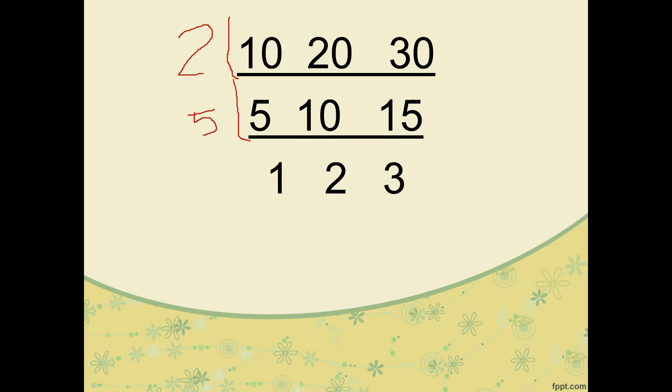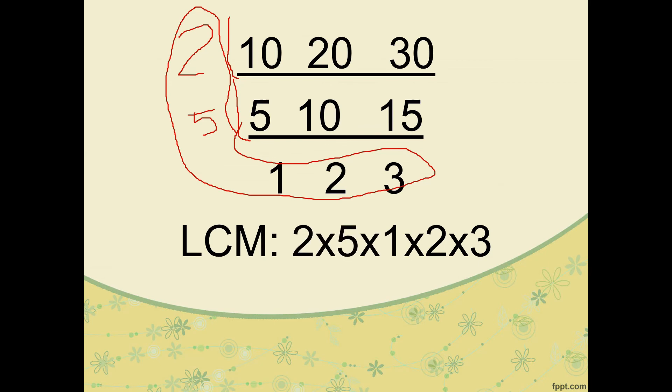1, 2, and 3. We cannot divide anymore, so we stop. We will find the LCM. The LCM is 2 times 5 times 1 times 2 times 3. 2 times 5 is 10, times 1 is 10, times 2 is 20, times 3 is 60. So the LCM is 60.